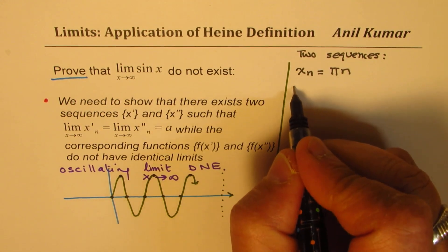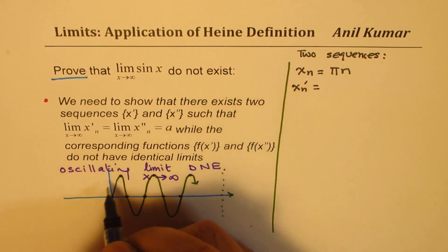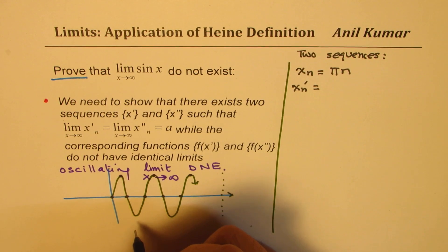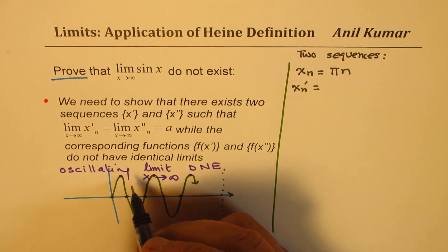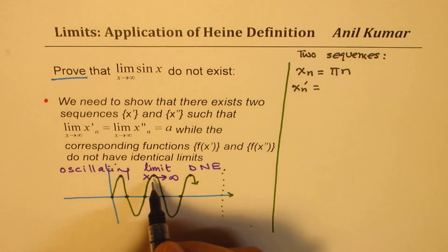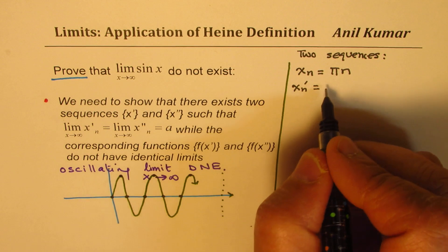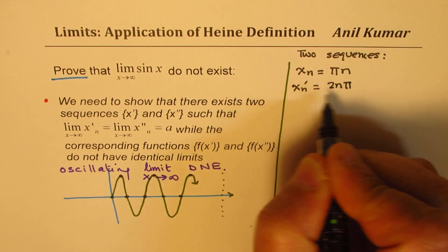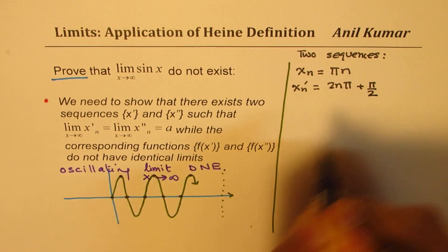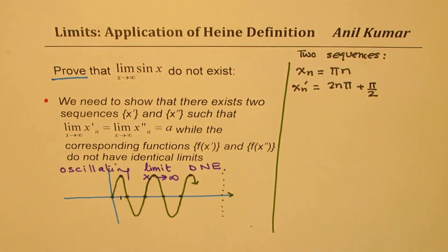So the second sequence — let me call it xn' — is when sine equals 1, which is at π/2. We take xn' = 2nπ + π/2, which is every time period plus π/2. So at π/2, we are going to get the value as 1.